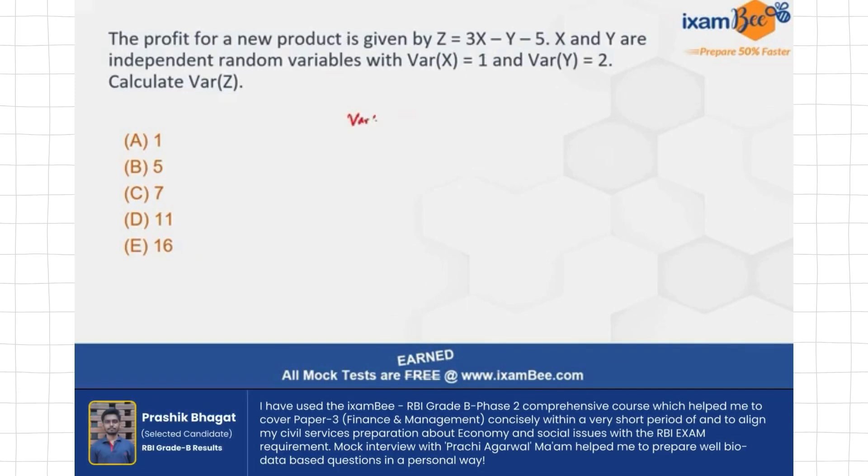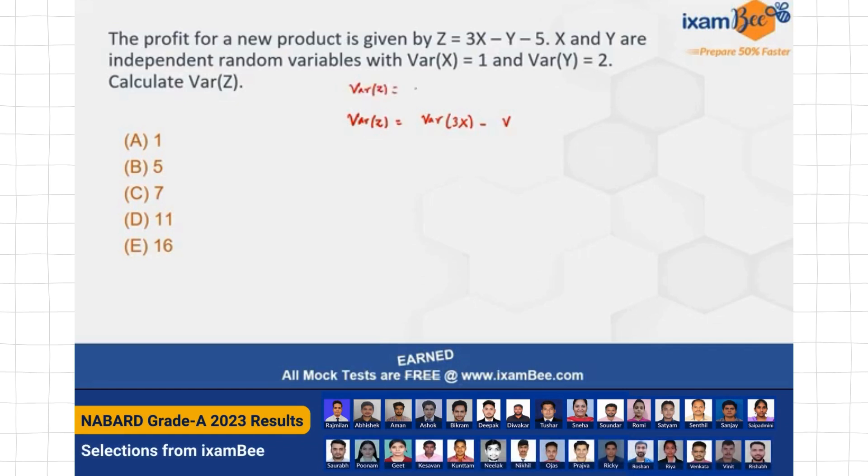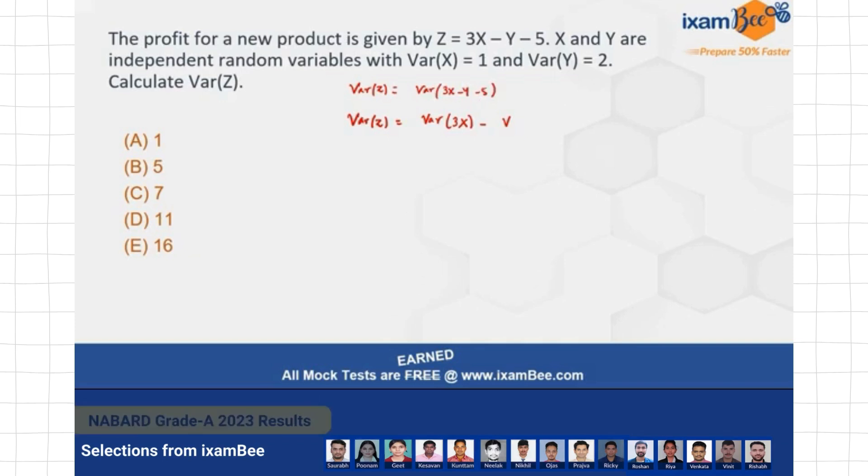See, for variance of Z, what do I need? I need this will be equal to the variance of 3 times X minus, so basically let me just write it down like this. The variance of Z will be equal to variance of 3X minus Y minus 5, right? This is what I need.